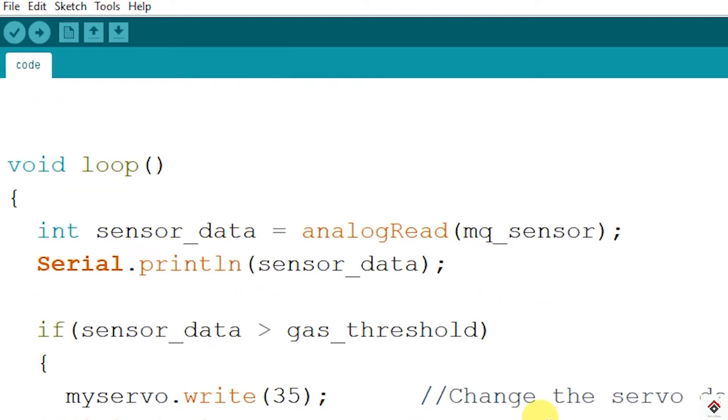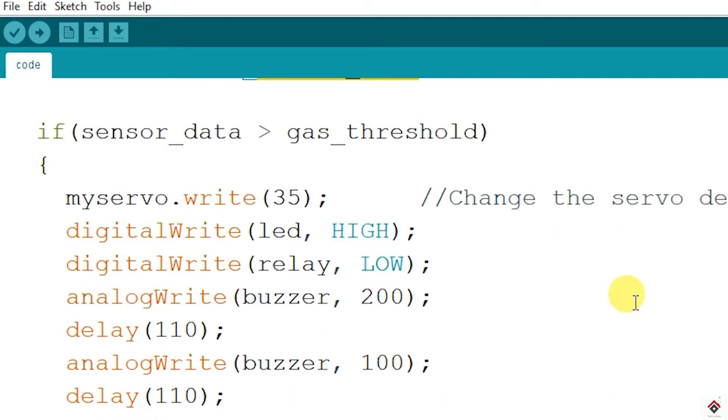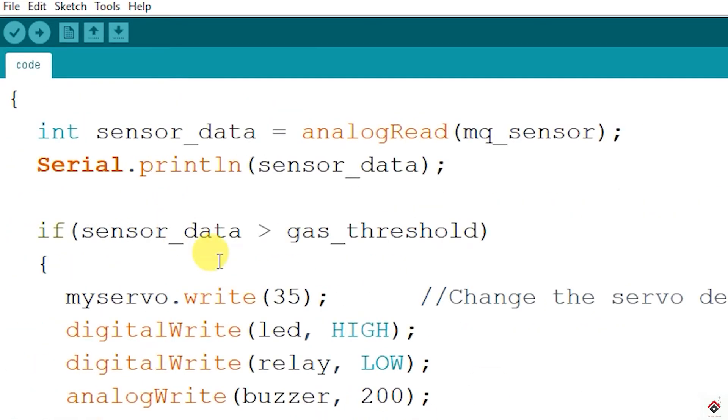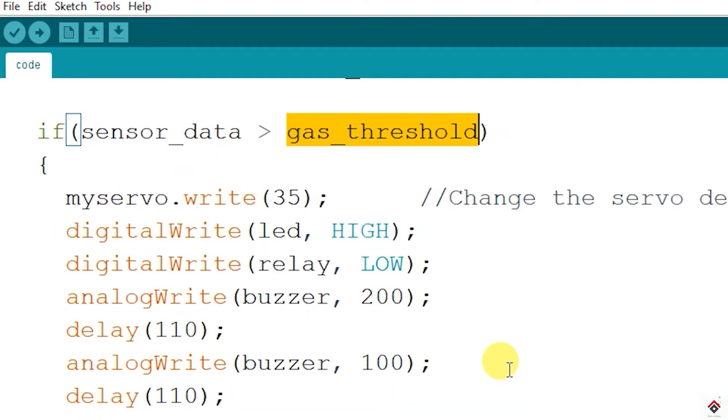Finally, in the loop section we are reading the sensor value through analog read function and also printing that on the serial monitor. Using simple if statement, I'm checking if the value from the sensor is crossing the defined gas threshold which is defined in the declaration. Once the value crosses this threshold, it indicates there's a gas leakage.